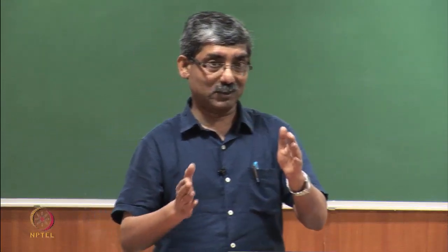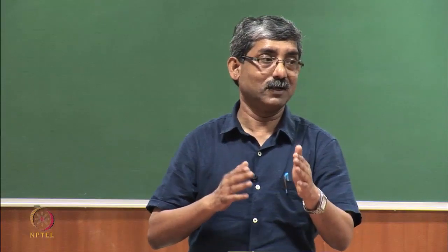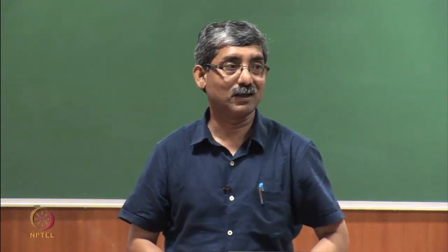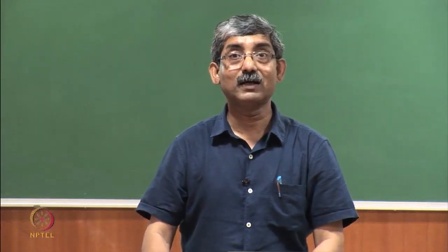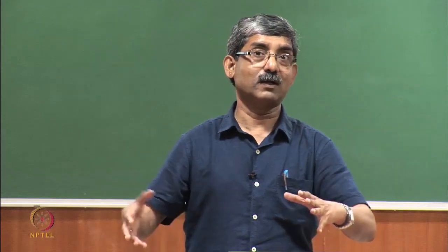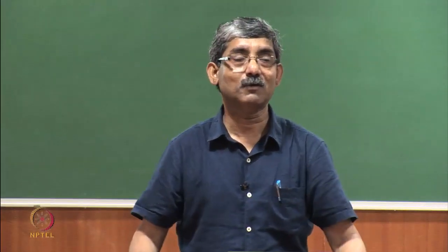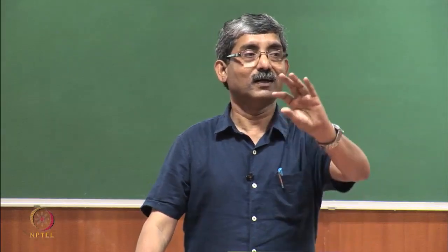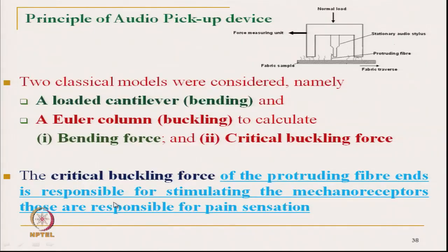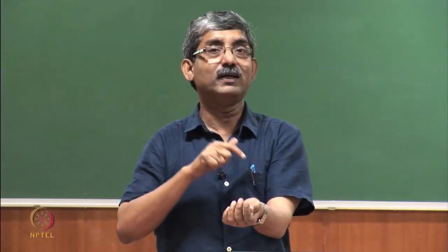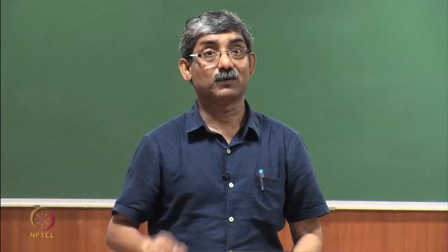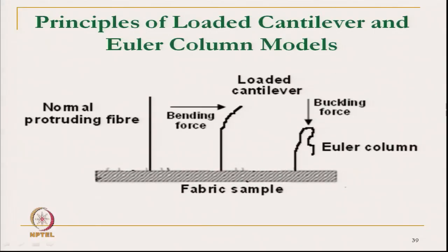Earlier measurement techniques were indirect and could only indicate that hairs are present. Here we measure the type of hair — if the bending force or buckling force is high, we can say this particular hair will create a prickle sensation. If the buckling force is less, it will not create any prickliness problem even if hairs are present. The critical buckling force of the protruding fibre end is responsible for stimulating mechanoreceptors.